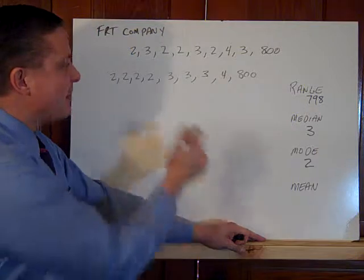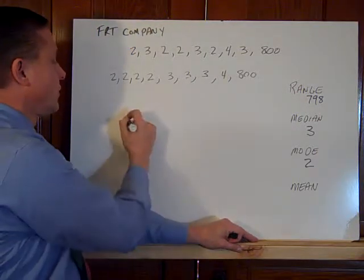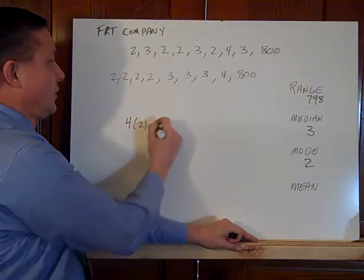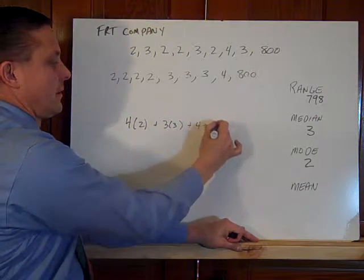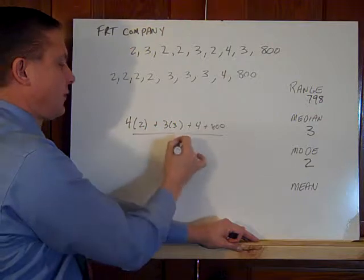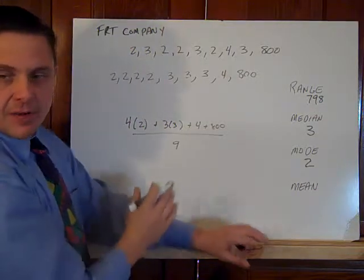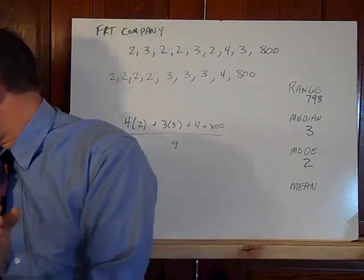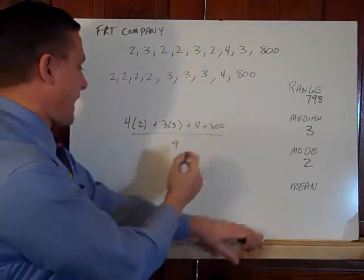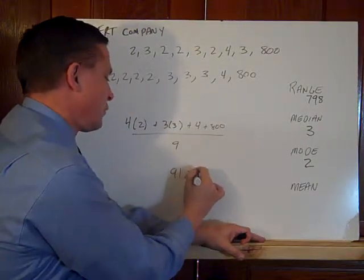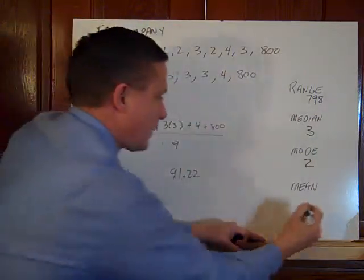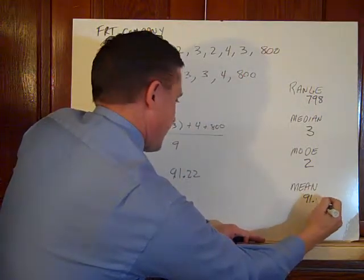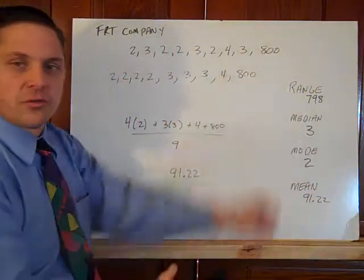Now my average is the sum of these. Well, there's four twos, three threes, a four and an 800. We agreed there were nine numbers in the set. If I use my calculator here, I found out that the average is 91.22 pounds. I summed these up and divided by nine. That is the numbers for the statistics.